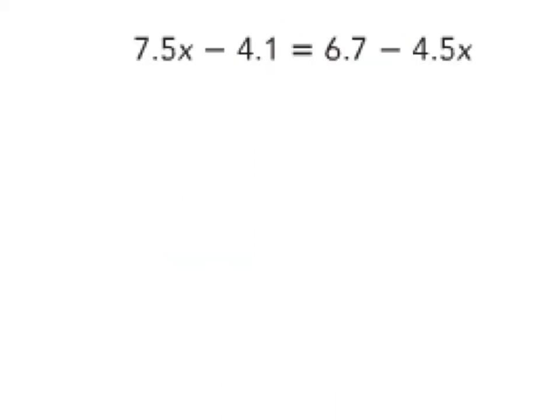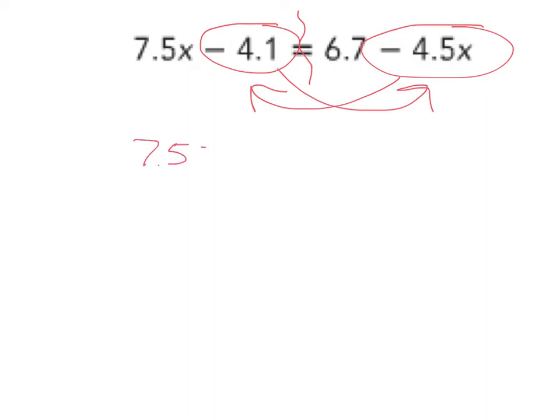Alright, for the last one, we have decimals. Draw the wall. Now, I want to get this letter to the left, and this constant to the right. So I'll rewrite it. 7.5x plus 4.5x equals 6.7 plus 4.1. Notice, the signs change when they cross over, because they're crossing over this wall.